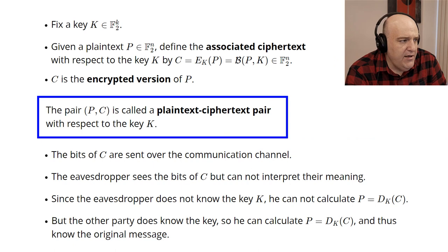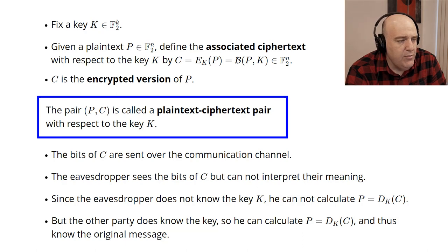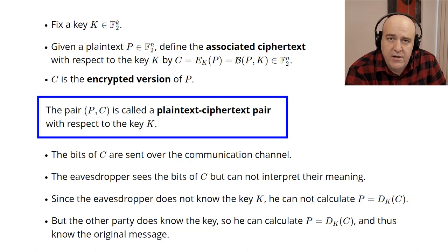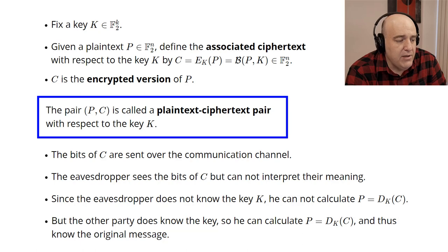If we fix a key K in F₂ᵏ and are given a plaintext P, the associated ciphertext with respect to that key is C = Eₖ(P) = B(P, K). This value of C is the encrypted version of P with respect to key K. Whenever we encrypt something, there must always be a key in the background. The pair (P, C) is called a plaintext-ciphertext pair with respect to key K.